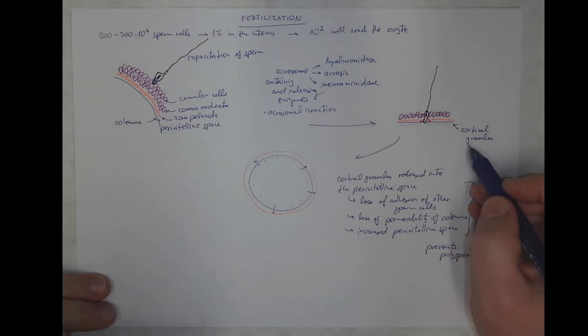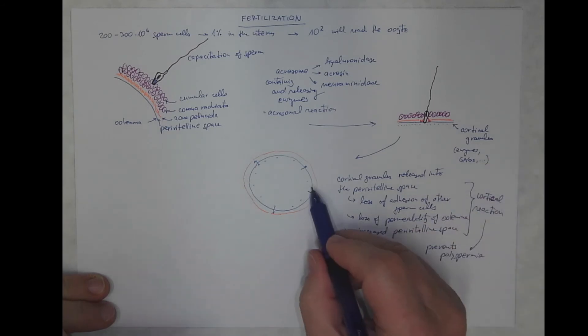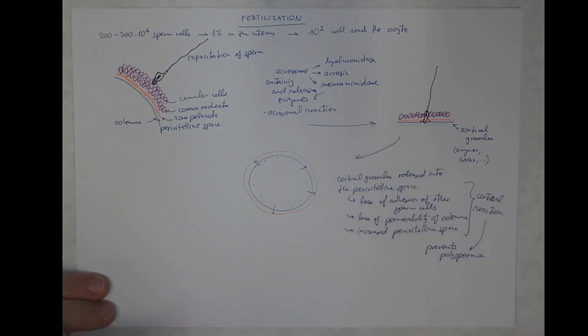The content of the cortical granules is highly heterogeneous. They are glycosaminoglycans. They are substances that bind to the surface, polysaccharides responsible for the adhesion, etc.